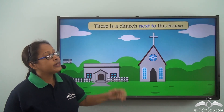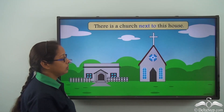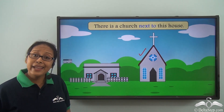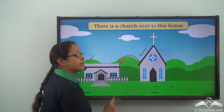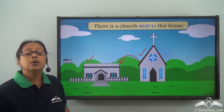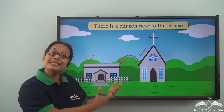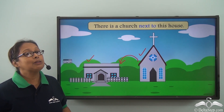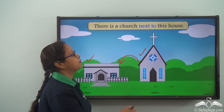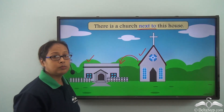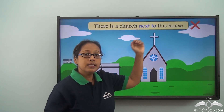There is a church next to this house. Let's check the picture. A church next to this house — this church is next to this house, which means this church is right beside the house or side by side. So when we talk about something being right beside or side by side, we use the preposition next to. There is a church next to this house.